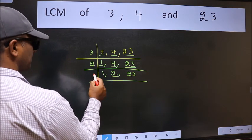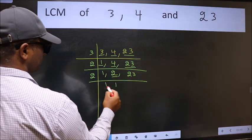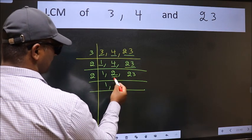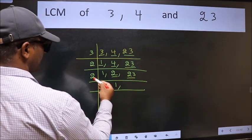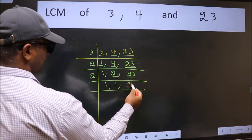Now here we have 2. 2 is a prime number. So 2 divided by 1 is 2. The other number 23 not divisible by 2, so we write it down as it is.